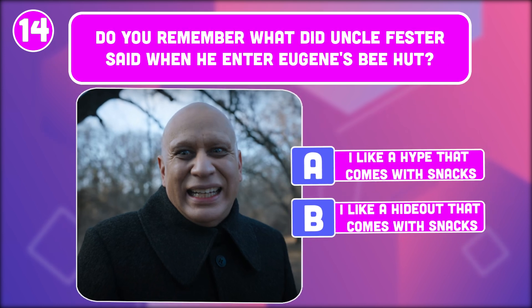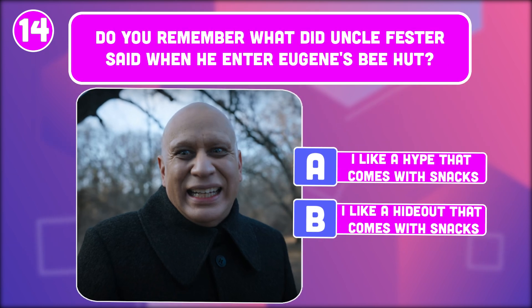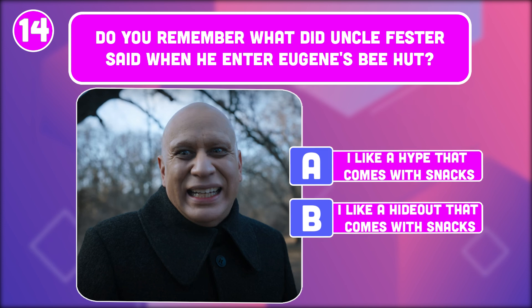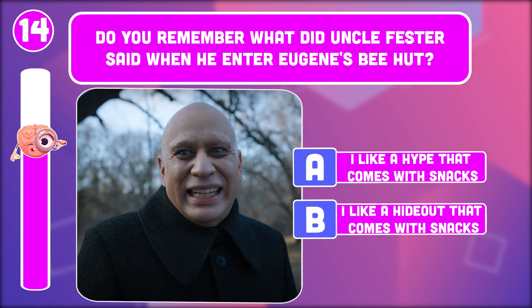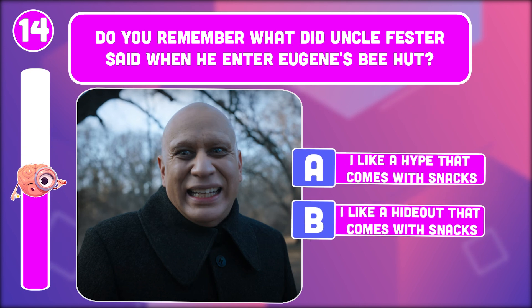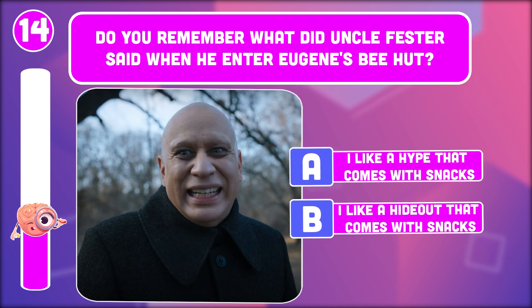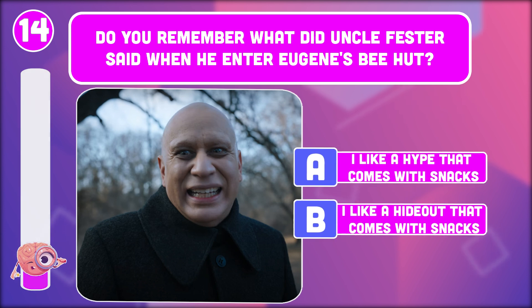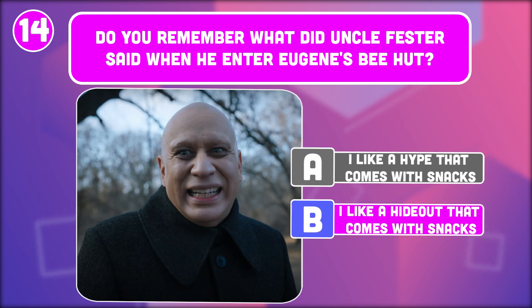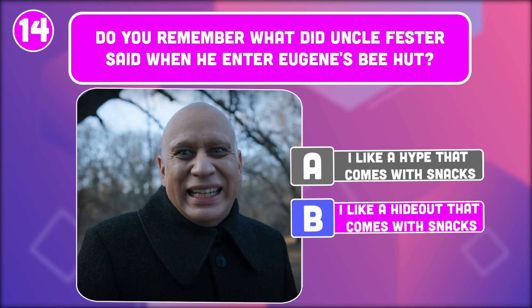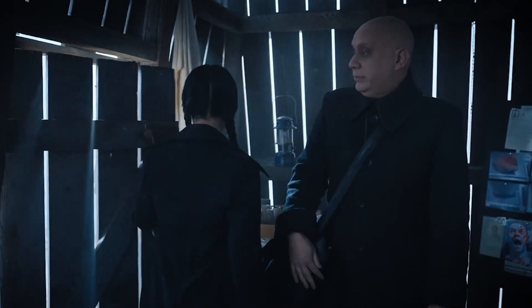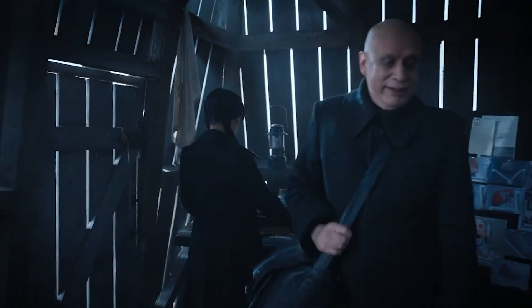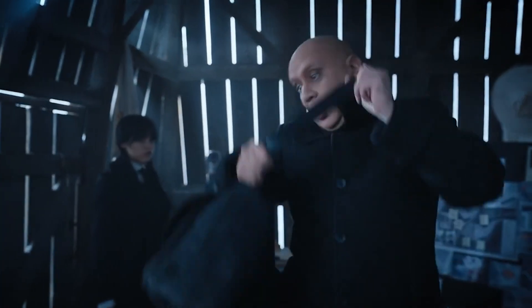Question fourteen: Do you remember what Uncle Fester said when he entered Eugene's bee hut? He said he likes a hideout that comes with snacks. Fun fact: he can shoot balls of lightning out of his fingertips!